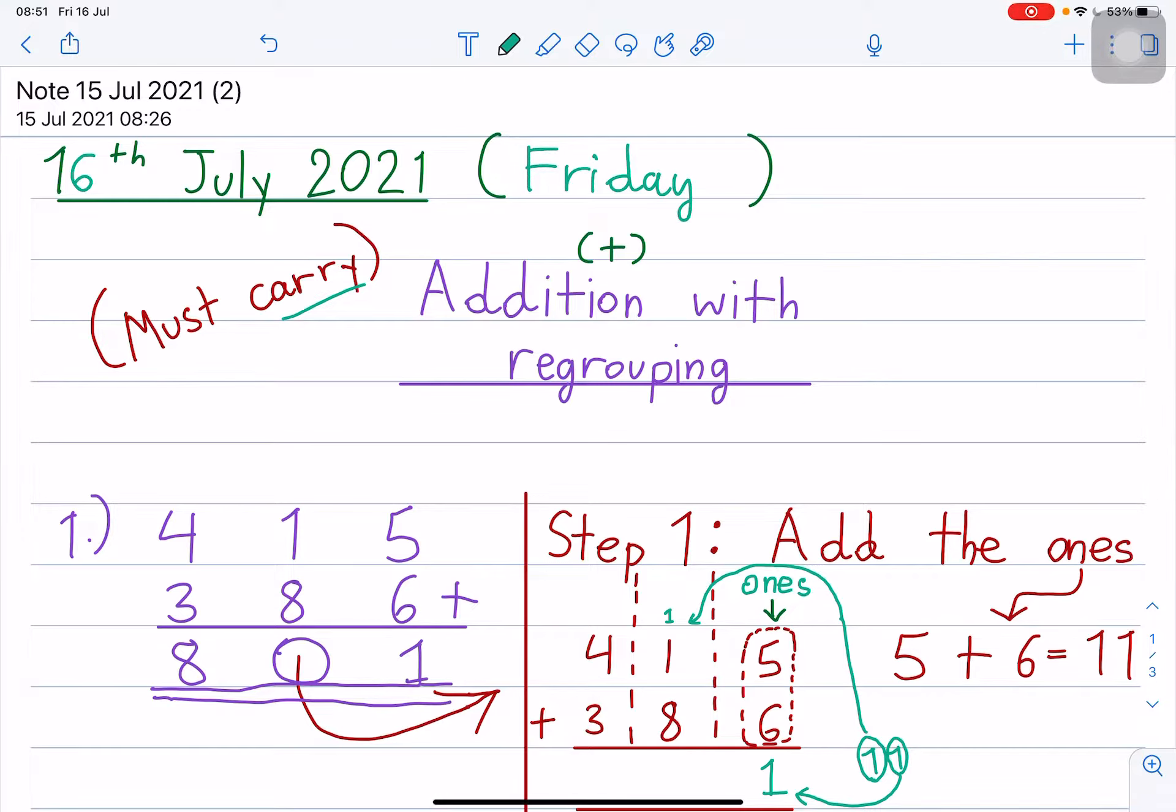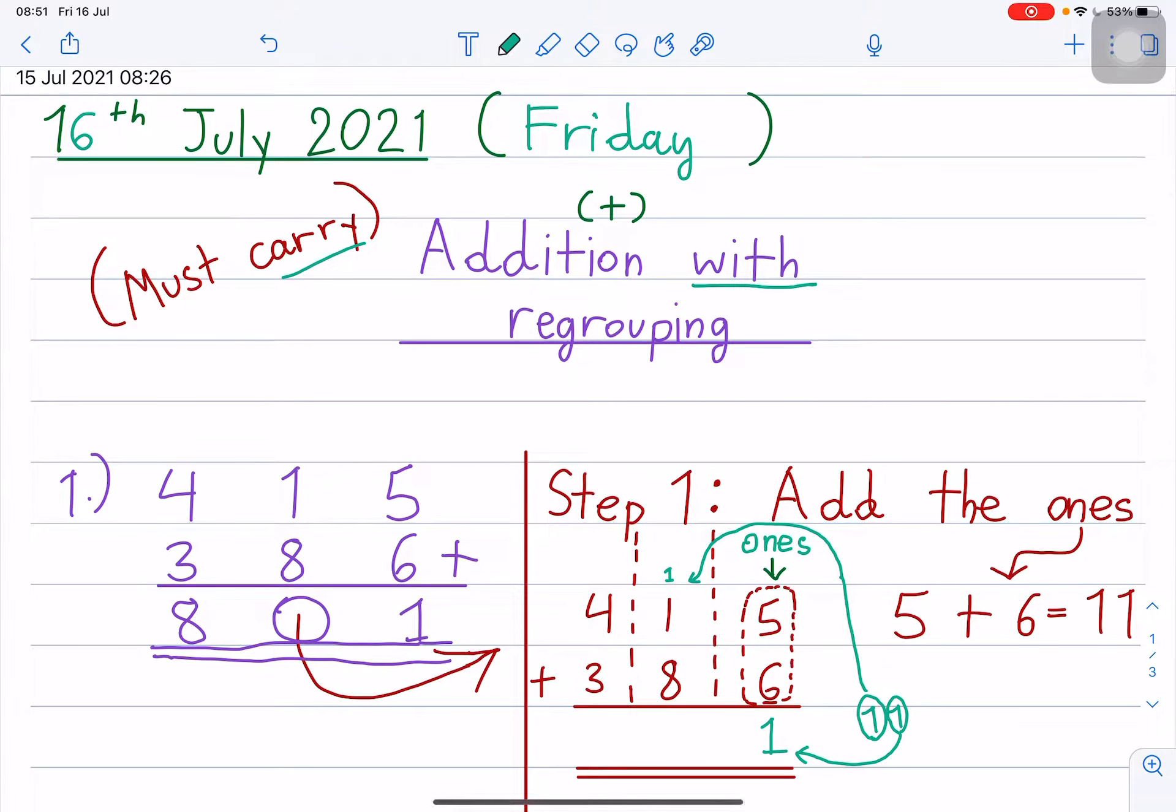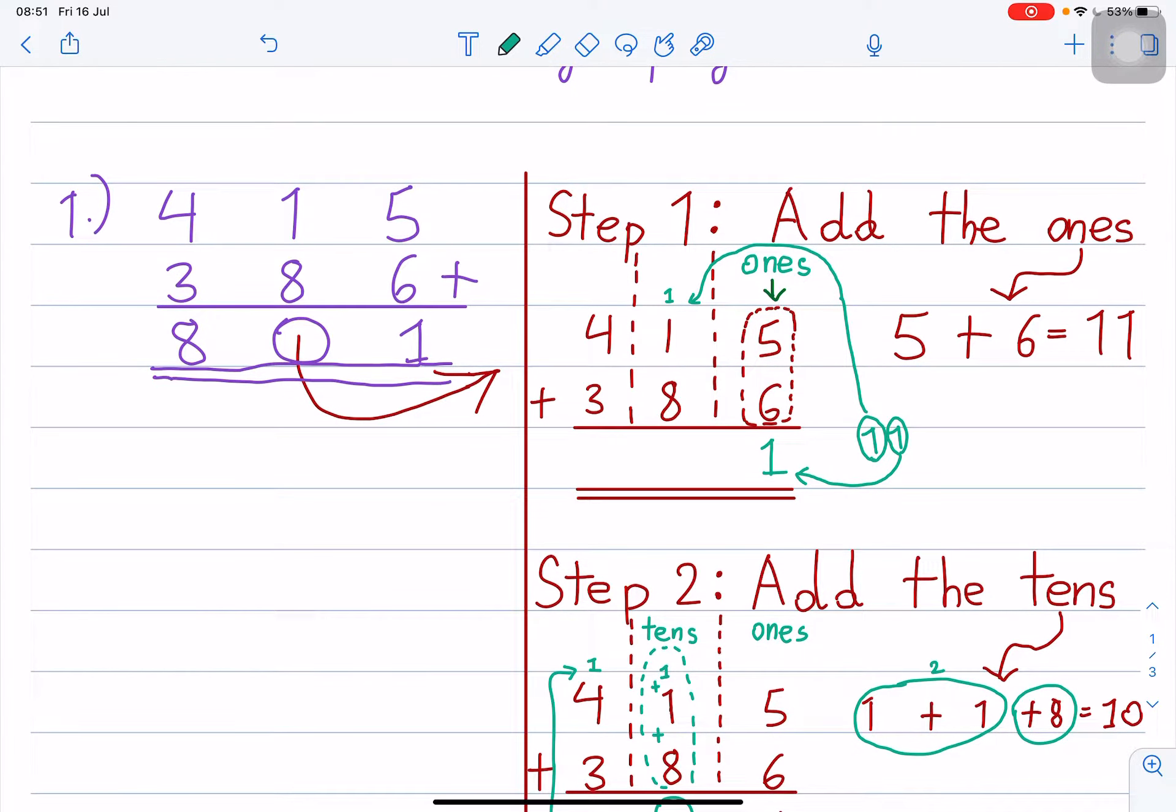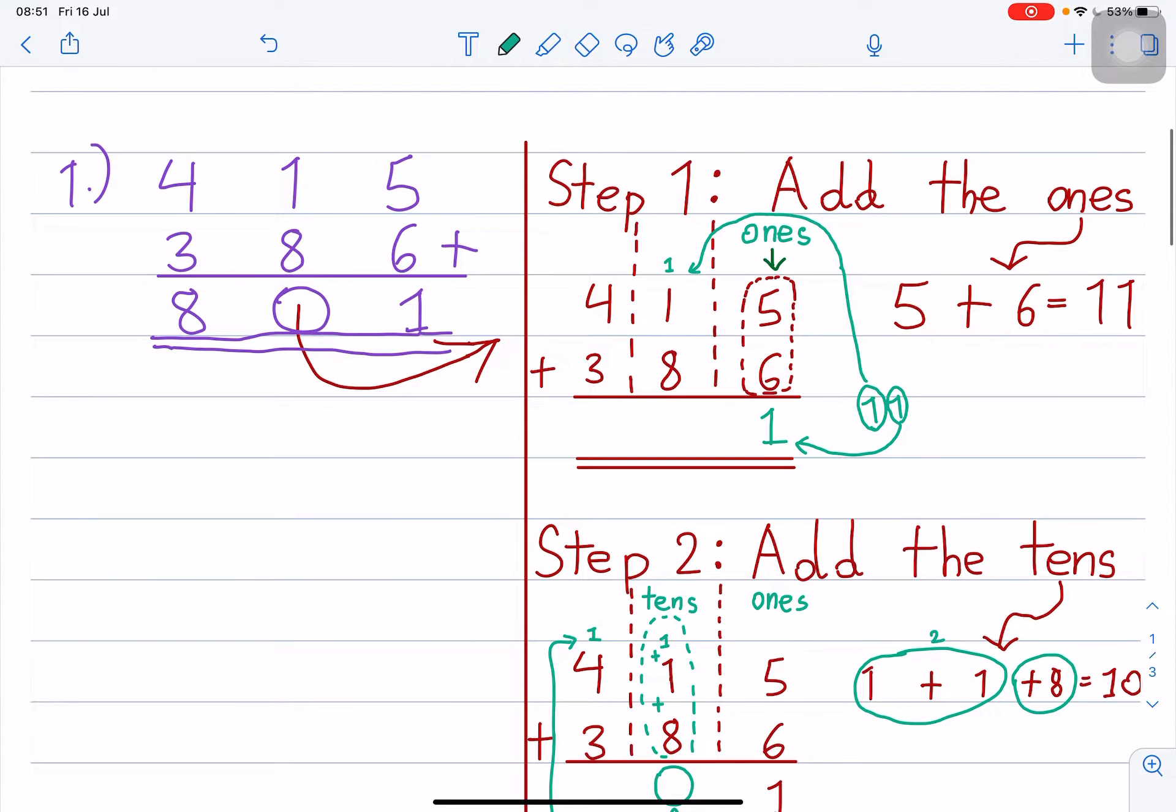So let's review addition with regrouping. Remember yesterday, we did number one which is this one: 415 plus 386. So how to do this?